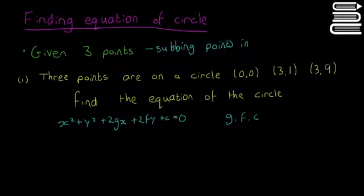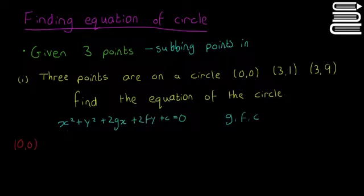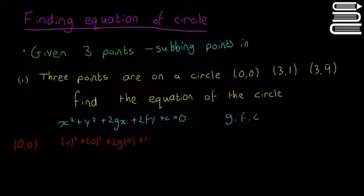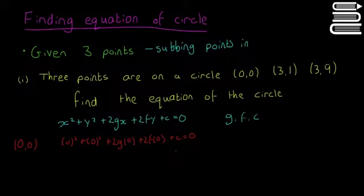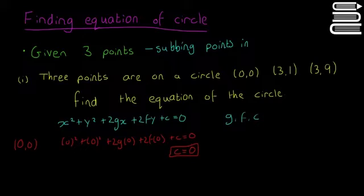The easiest point to start with is (0, 0). Subbing it in: 0² + 0² + 2g(0) + 2f(0) + c = 0. That just leaves us with c = 0. So that's our first equation done — c is equal to 0.